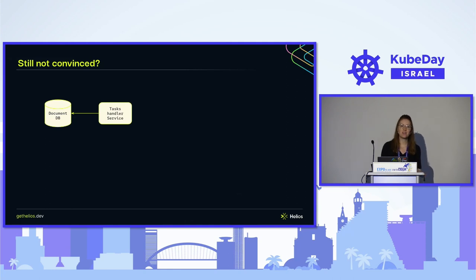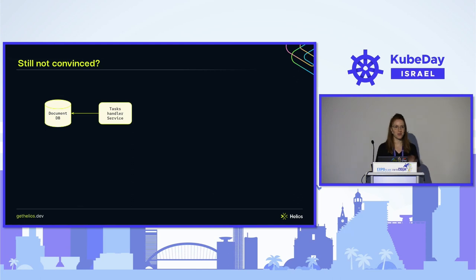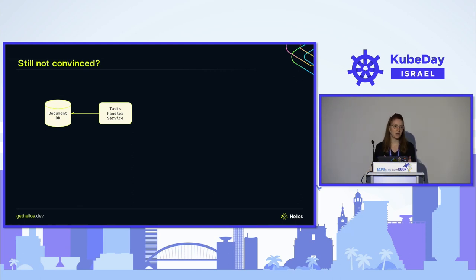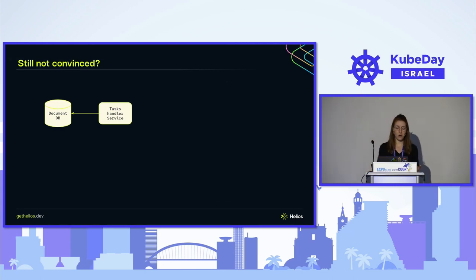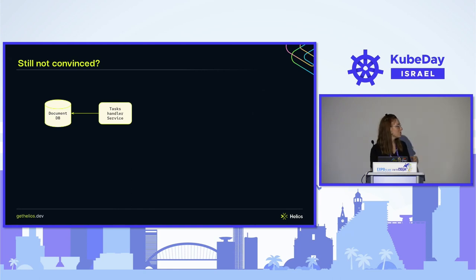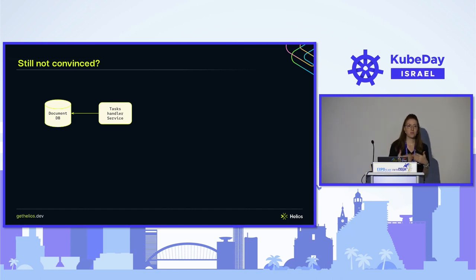If you're still not convinced and thinking these are all very basic examples, I hope I can show you a scenario we came across with one of our customers. Let's assume the task handler service reads a document from the document DB and then makes a call to a Kubernetes cluster, running some logic as part of a task in a job — depending on settings read from that document.